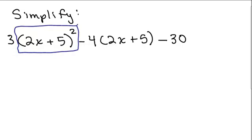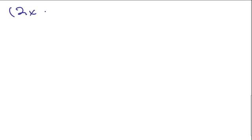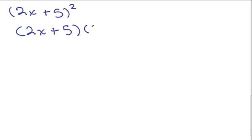Now, if you can't remember how to square a binomial in your head, then what you could do is do that on scratch paper. So let's do that. Let's say you wanted to remember how to do 2x plus 5 squared. Remember, that's 2x plus 5 times 2x plus 5. And you could use the FOIL method.